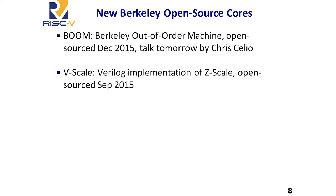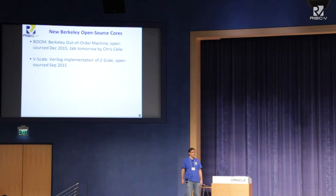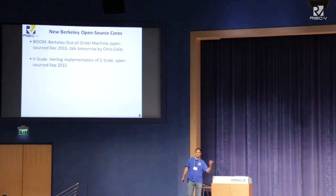On open-source cores: Chris Celio gave a talk on BOOM — the Berkeley Out-of-Order Machine — at the last workshop. He'll give an updated talk tomorrow. Last time BOOM wasn't open source, but I'm happy to say it is now. We also released VScale between workshops — a Verilog implementation of a RISC-V core for people who aren't comfortable with Chisel. Of course, these are just Berkeley's open-source cores; there are many other people out there building RISC-V open-source cores, which is great.